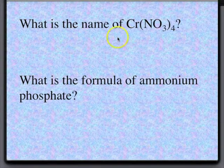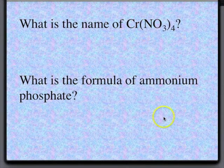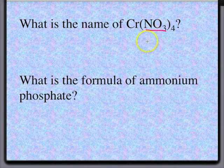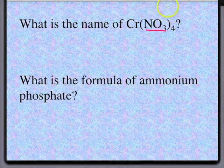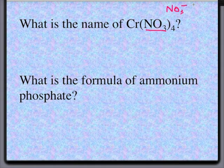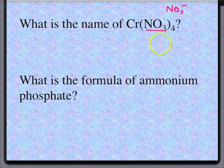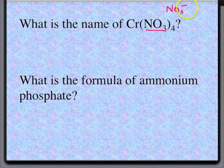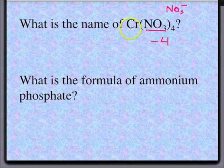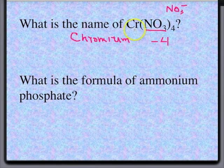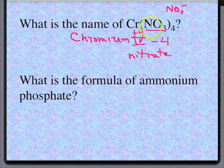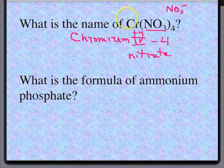So, what is the name of Cr(NO3)4? This is NO3 and we've memorized NO3. NO3 is the polyatomic ion with a negative one charge and there are four of them. So, that means you have four nitrates at minus one each. That is a minus four contribution. You also have chromium. Chromium is going to have a plus four charge. Chromium(IV) nitrate would be the name of this compound.